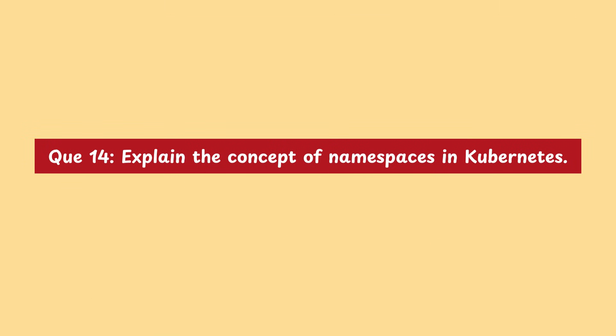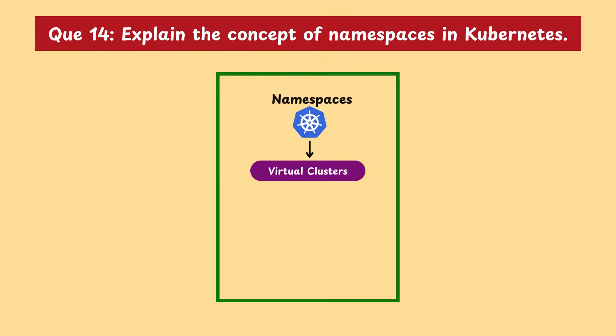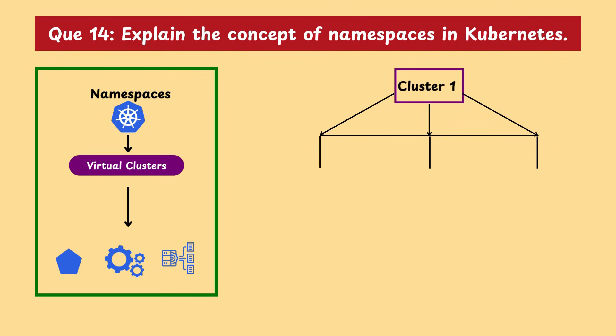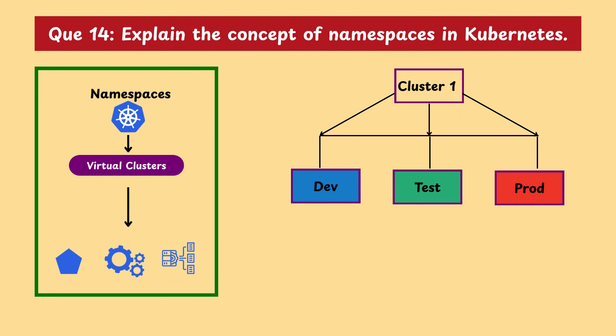Moving on with our next question: explain the concept of namespaces in Kubernetes. Namespaces in Kubernetes are like virtual clusters within a physical cluster. They help isolate resources like pods, services, and configs so teams or projects can work independently. For example, you can run dev, test, and production environments in the same cluster using separate namespaces. This keeps things organized, secure, and easy to manage, and is especially useful in large teams or multi-tenant setups.